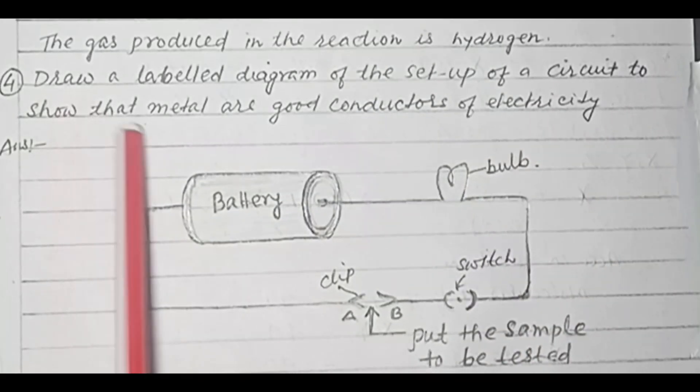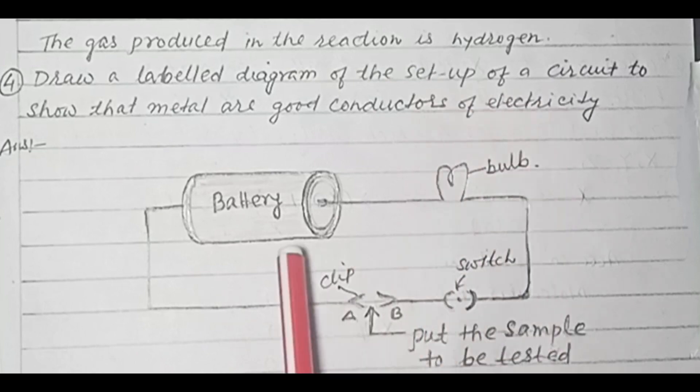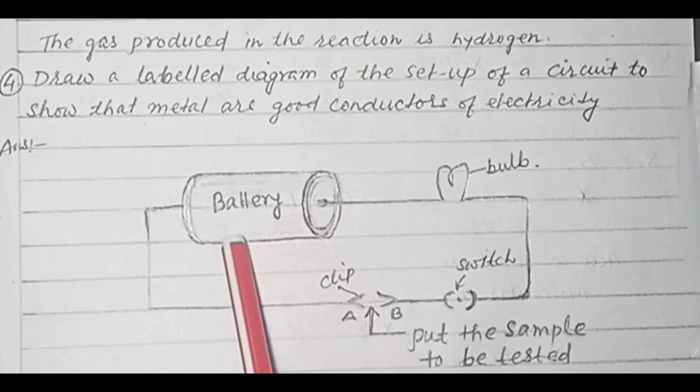Children, this is a labelled diagram of the setup of a circuit to show that metals are good conductors of electricity.